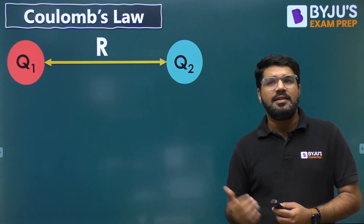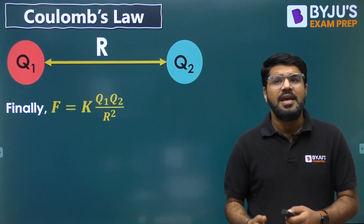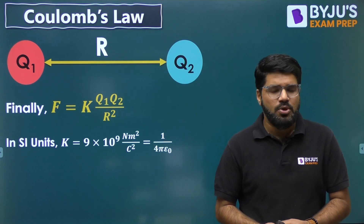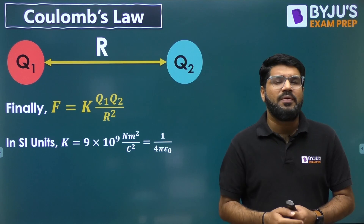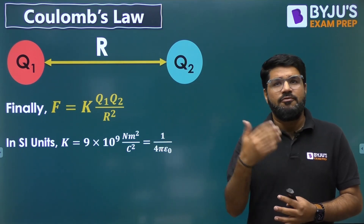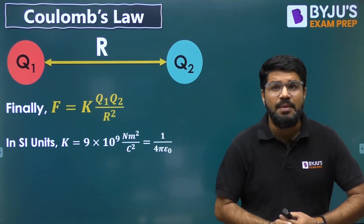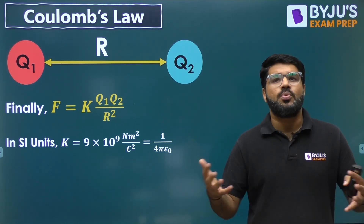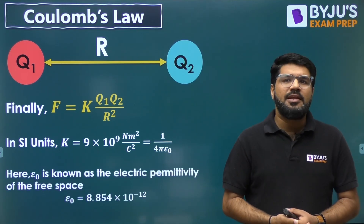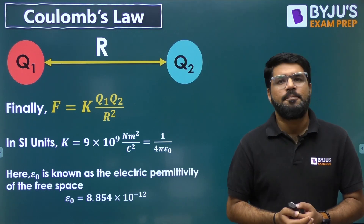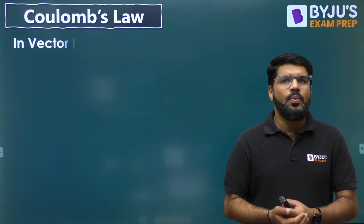Replacing the proportionality sign with the constant of proportionality, we can write F equals K times Q1 Q2 divided by R squared, where in SI units K turns out to be 9 × 10⁹. Forces are in Newtons, distances in meters, and Q is in Coulombs — the unit itself was named after Coulomb. K is measured as Newton meter squared per Coulomb squared, which is also equal to 1 divided by 4π epsilon-naught, where epsilon-naught is the electric permittivity of free space, equal to 8.854 × 10⁻¹².